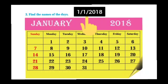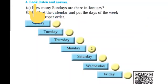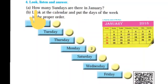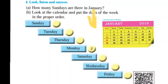January 2018. Activity 4: Look, Listen and Answer. A. How many Sundays are there in January? In this calendar, there are 4 Sundays. So, 4 Sundays are there in January.